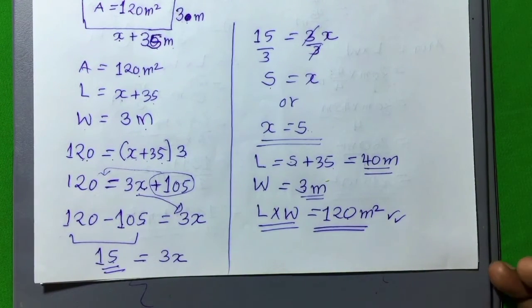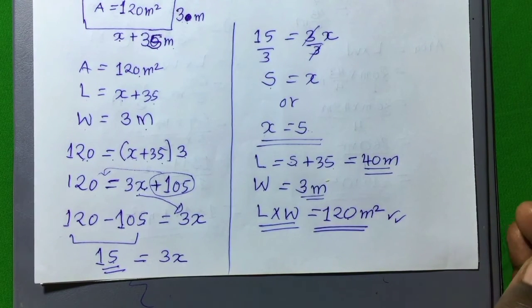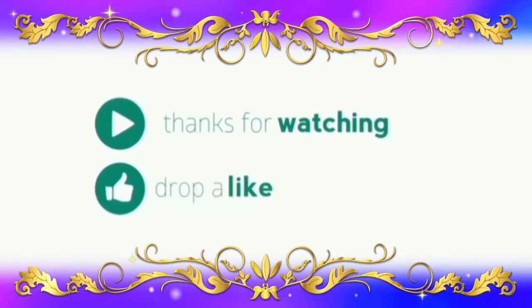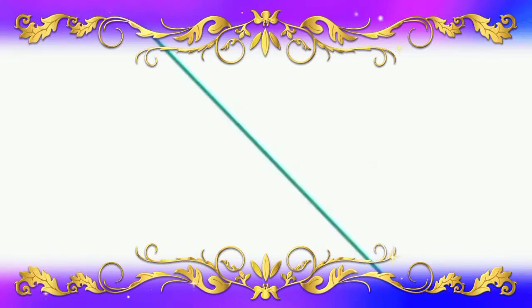If we multiply L by W, we can get 120 meters squared as the area of the rectangle. Then, I hope you have understood this one very nicely. If this video is helpful, please consider subscribing to my YouTube channel. Thank you very much. Thank you very much.